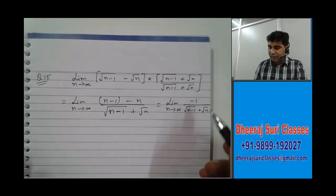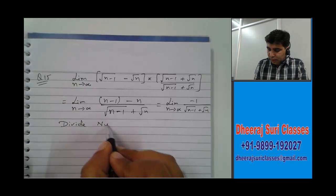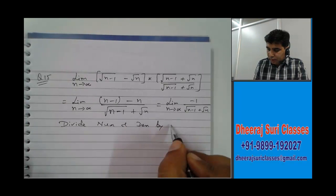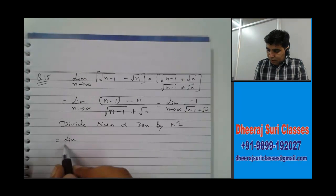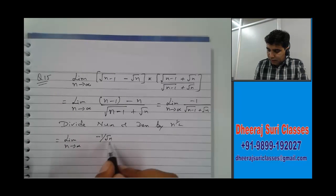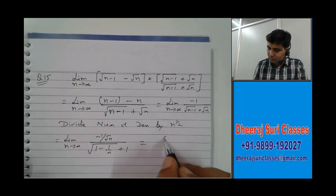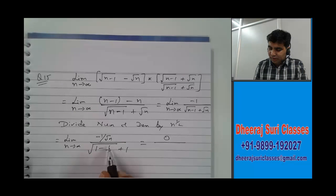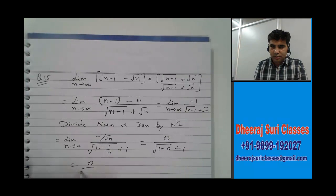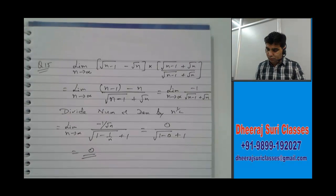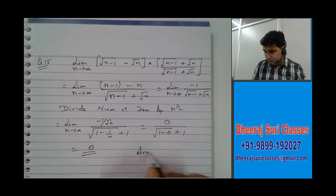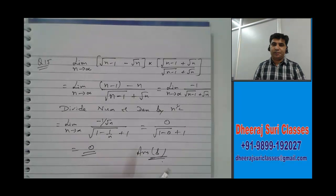But if we want to proceed further, the highest power of n in the denominator is one-half, so we divide numerator and denominator by n^(1/2). We get: limit as n goes to infinity of (minus 1 divided by root(n)) upon (root(1 minus 1/n) plus 1). Applying the limit: 1 by infinity is 0, and root(1 minus 1/infinity) becomes root(1−0) = 1, so the denominator is 1+1. Zero divided by something is 0. Therefore this limit is 0, and the correct option is option B.